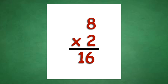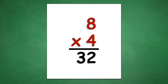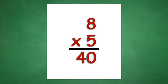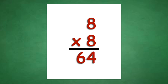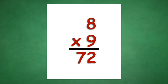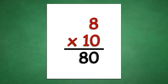Table of 8: 8 times 1 equals 8, 8 times 2 equals 16, 8 times 3 equals 24, 8 times 4 equals 32, 8 times 5 equals 40, 8 times 6 equals 48, 8 times 7 equals 56, 8 times 8 equals 64, 8 times 9 equals 72, 8 times 10 equals 80.